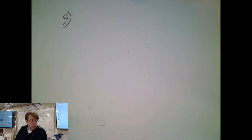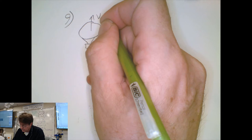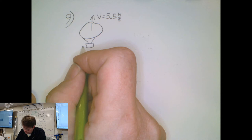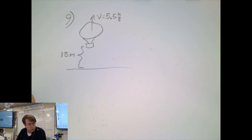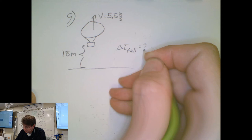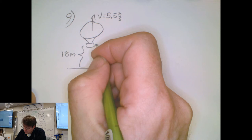Problem nine: a hot air balloon is rising upward at a constant speed of 5.5 meters per second. When it's 18 meters above the ground, a package is released. It's released from rest relative to the balloon, but not from rest relative to the Earth. It will fall 18 meters to the ground and we're asked to find the time the package is in the air.